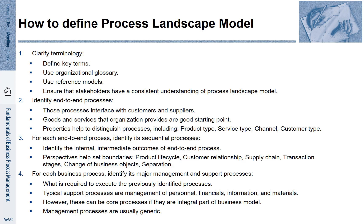As a second step, we have to identify the end-to-end processes. These are the processes that interface with customers and suppliers, and they relate to the goods and services that the organization provides. Some properties help to distinguish these processes, such as product types, service types, different channels, or different types of customers. For each of the identified end-to-end processes, we identify its sequential sub-processes and the different steps, identifying the internal intermediate outcomes of the end-to-end process.